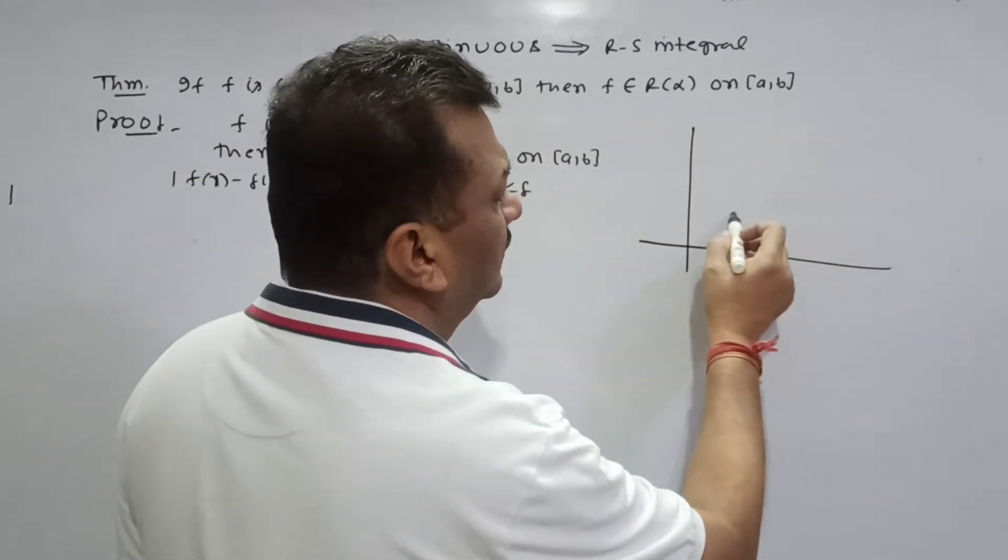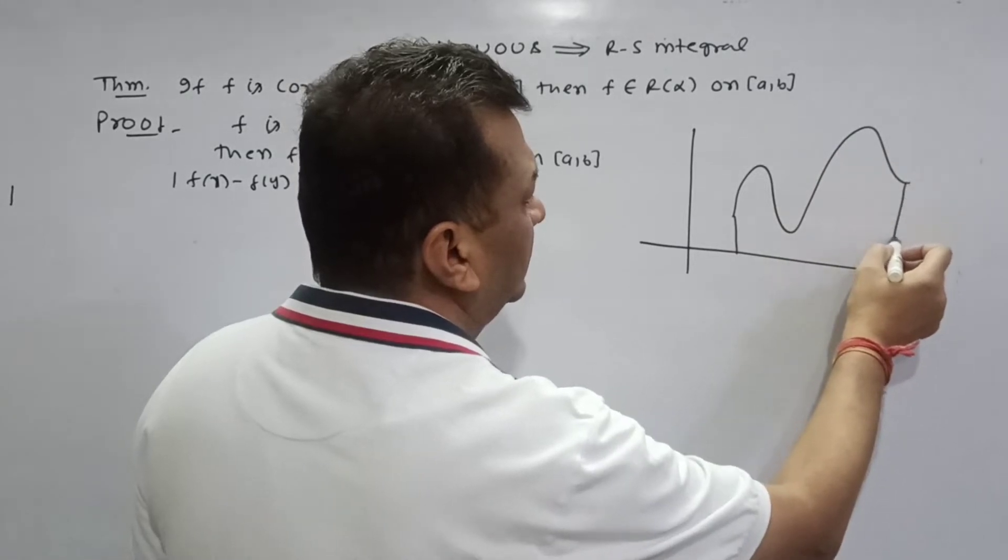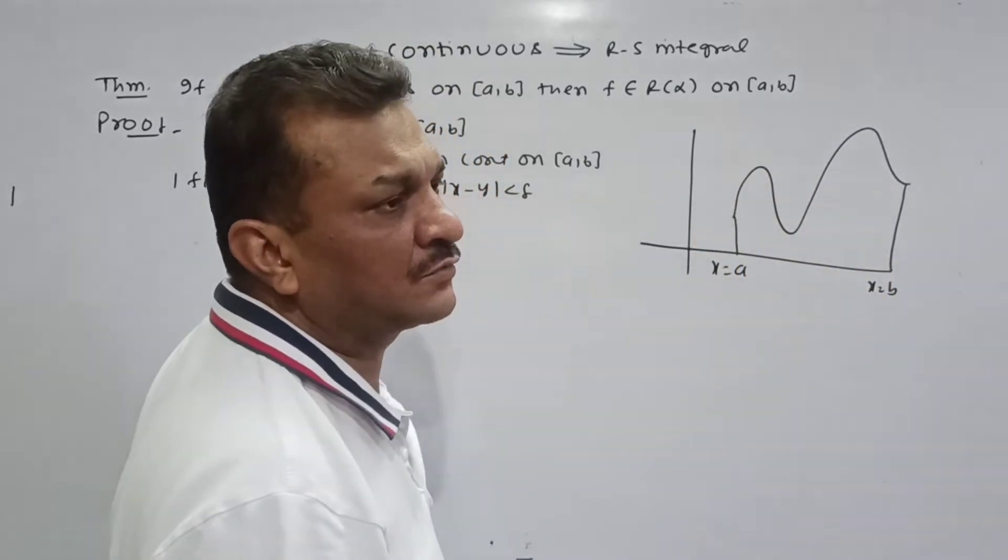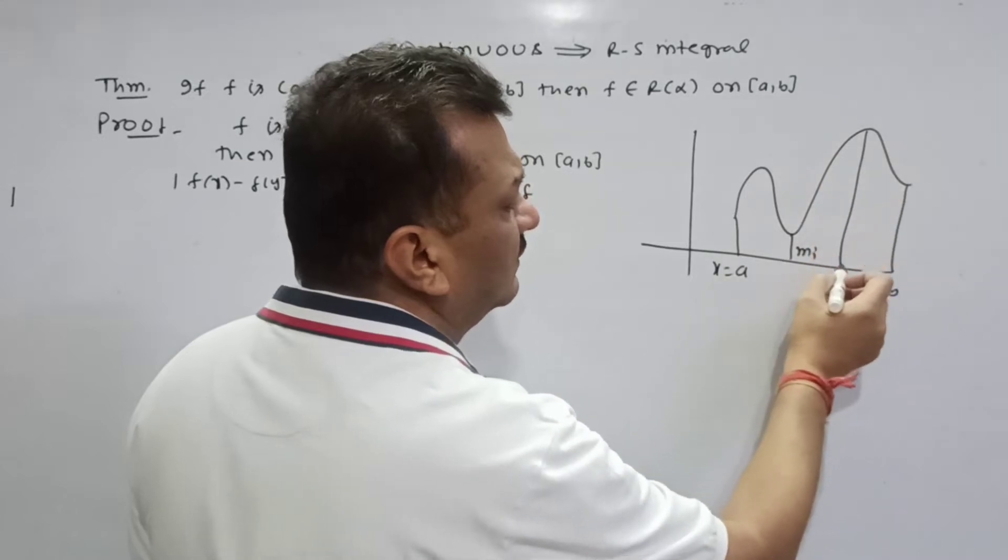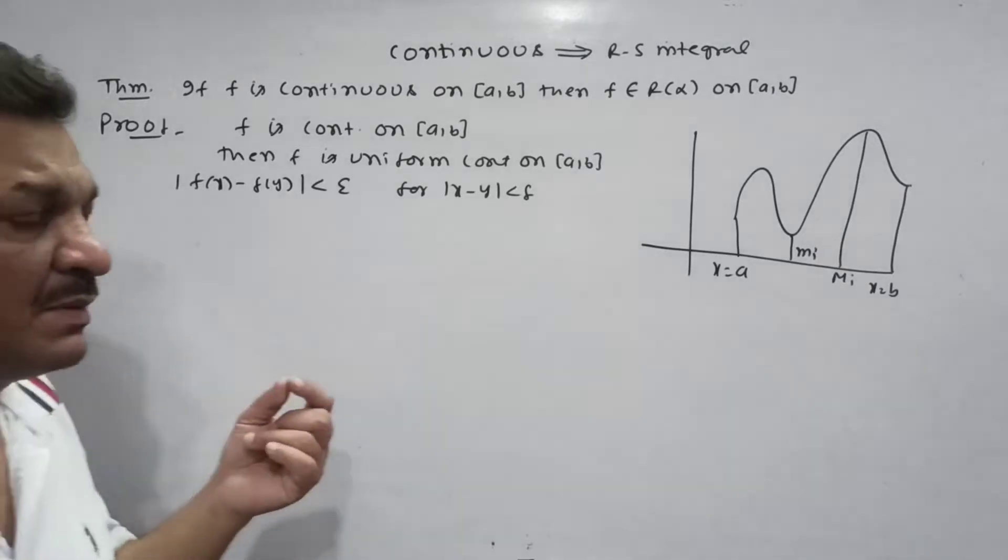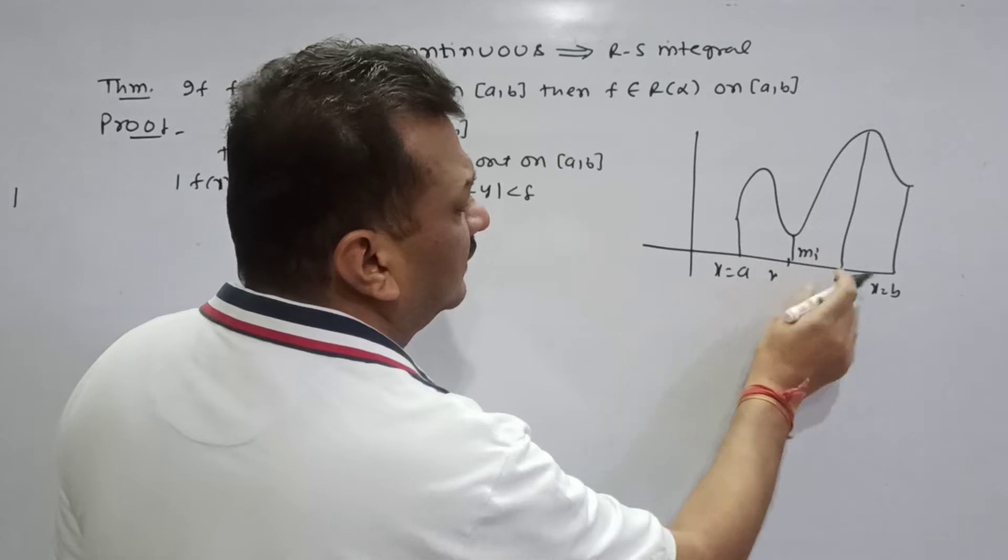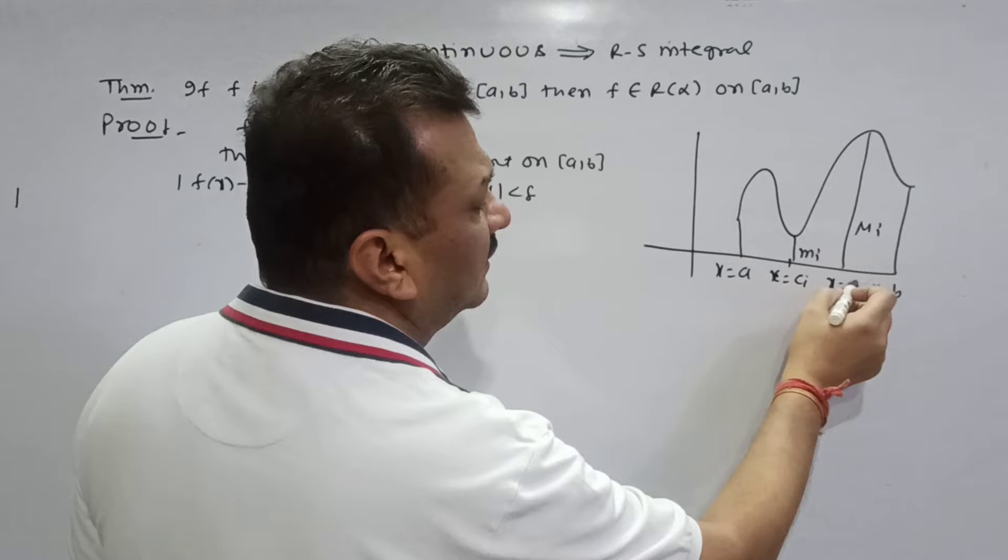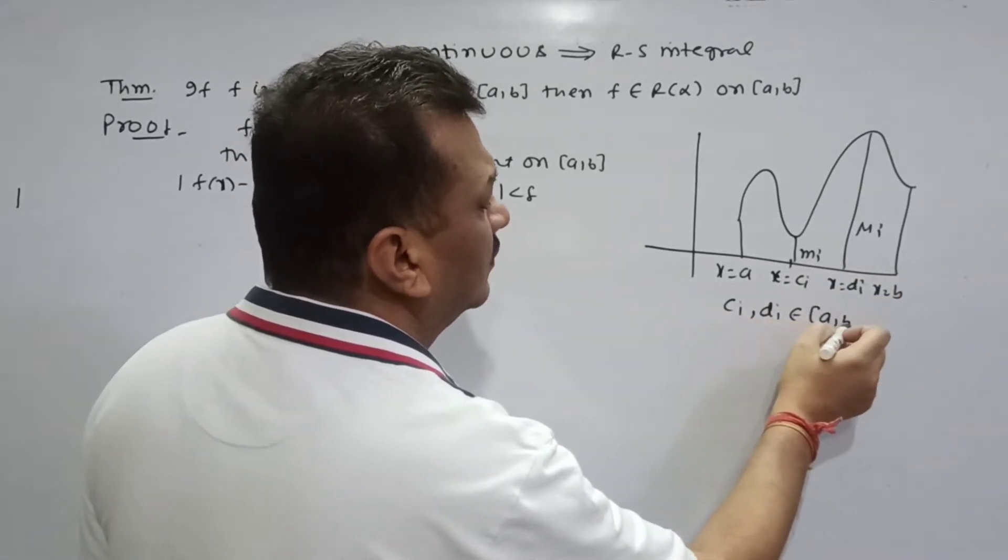If F continues at closed interval, the function is continuous. The function is bounded, has minimum and maximum value. Let x equal to ci be the minimum, x equal to di be the maximum, ci and di belong to A to B.